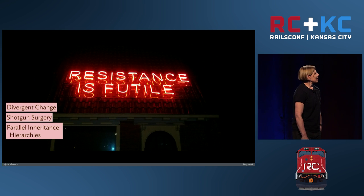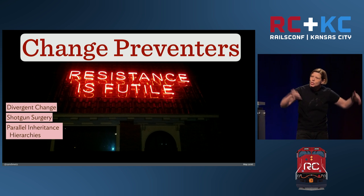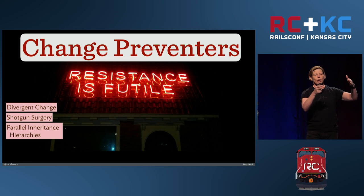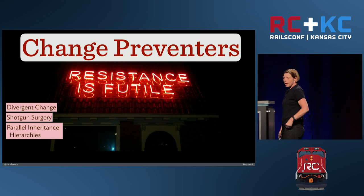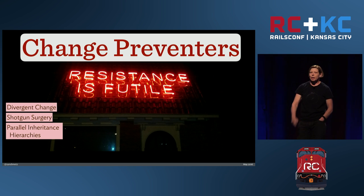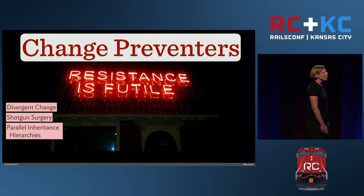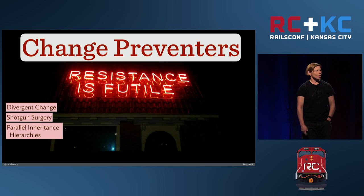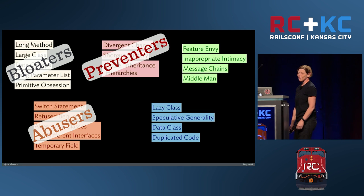This next group is stuff that makes change hard. Divergent change, shotgun surgery, and parallel inheritance hierarchies — sometimes you have two hierarchies where every time you change something you've got to go add or move in both sides. These are the kind of things that keep you from wanting to change code. Notice that almost everything I'm talking about — if nothing ever changes — is probably okay. Code that's really embarrassing is fine to keep. You should be brave about your ugly, embarrassing code, because it is not costing you money if it's not changing. Sometimes you should own them, be proud, and walk away.